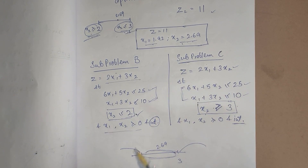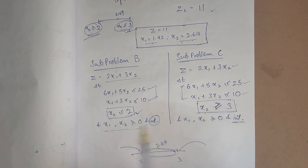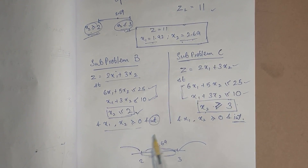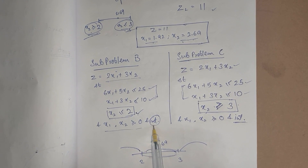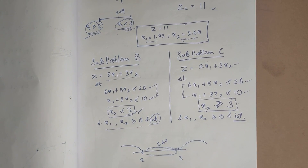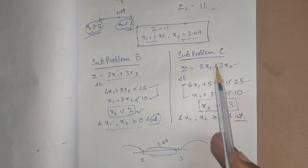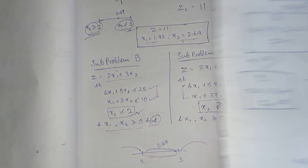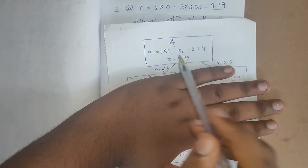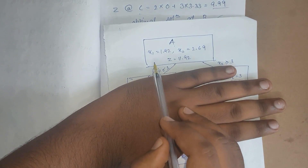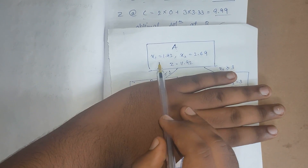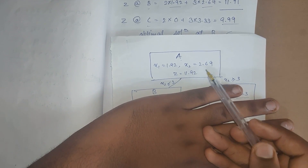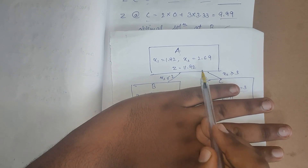We are adding new constraints so that we can convert the decimal into a whole number, while x1 and x2 remain greater than or equal to 0 and integers. We build a branch-and-bound tree. The root node A is our initial solution: x1 = 1.92, x2 = 2.69, Z = 11.92. We now branch into subproblem B (x2 ≤ 2) and subproblem C (x2 ≥ 3).